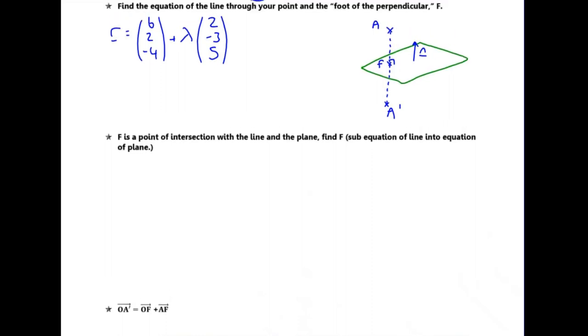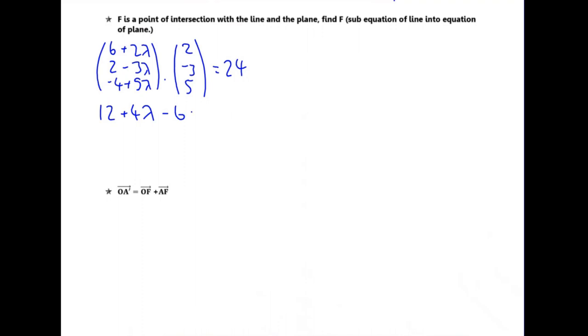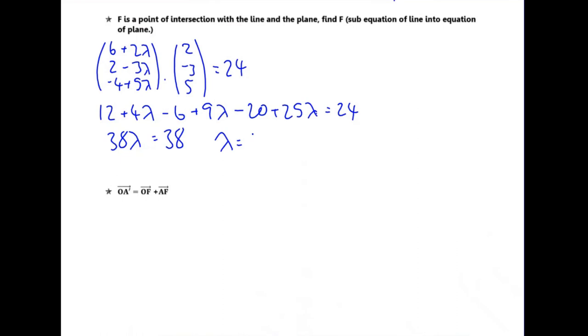Then we find where this line intersects the plane. I'm not going to find the coordinates of F — I just need to find the value of lambda. To find the intersection, set the line equal to the plane equation and substitute R in. Smushing together: (6 + 2λ, 2 − 3λ, minus 4 + 5λ). Dot this with (2, minus 3, 5) and set equal to 24. That gives: (6 + 2λ)·2 + (2 − 3λ)·(minus 3) + (minus 4 + 5λ)·5 = 24, which gives 38λ = 38, so λ equals 1.